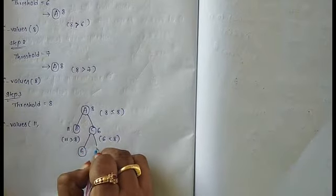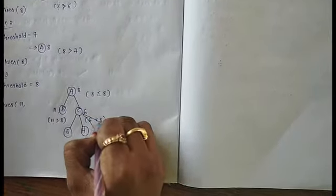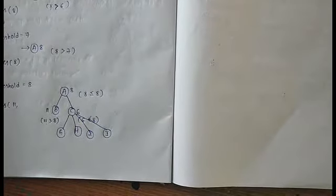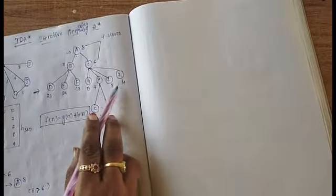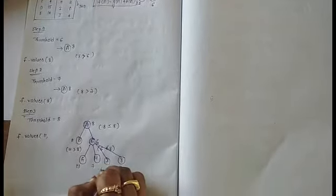We expand C and check its children: G, H, I, and J. Their F-scores are: G = 13, H = 7, I = 8, J = 14. Comparing with threshold 8: G's 13 is greater than 8, H's 7 is less than 8, I's 8 is equal to 8, and J's 14 is greater than 8. We continue depth-wise exploration for H and I.